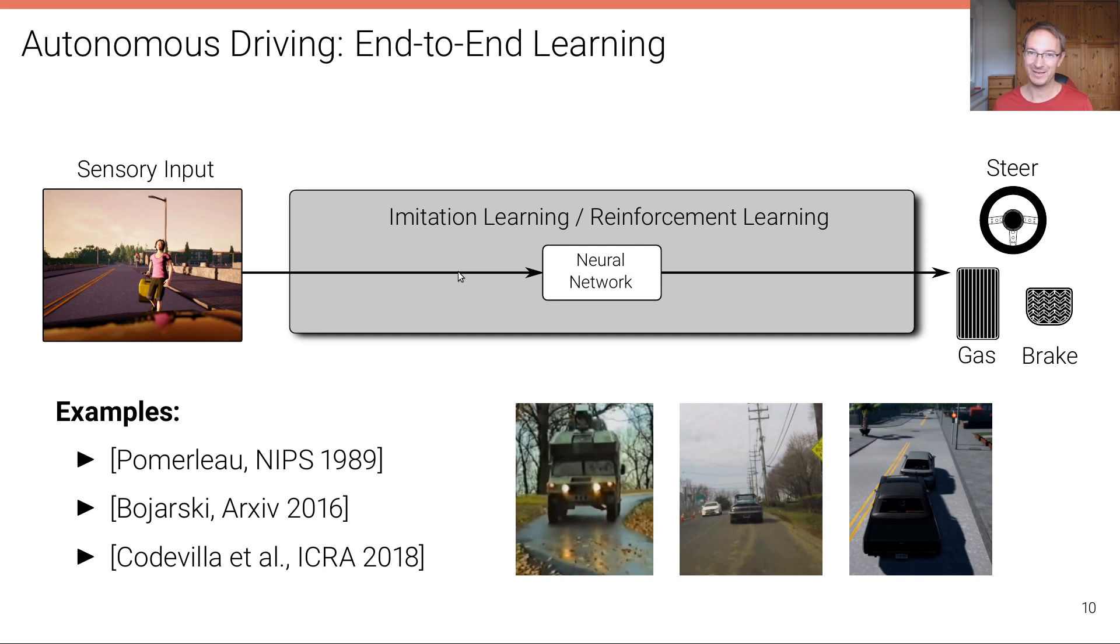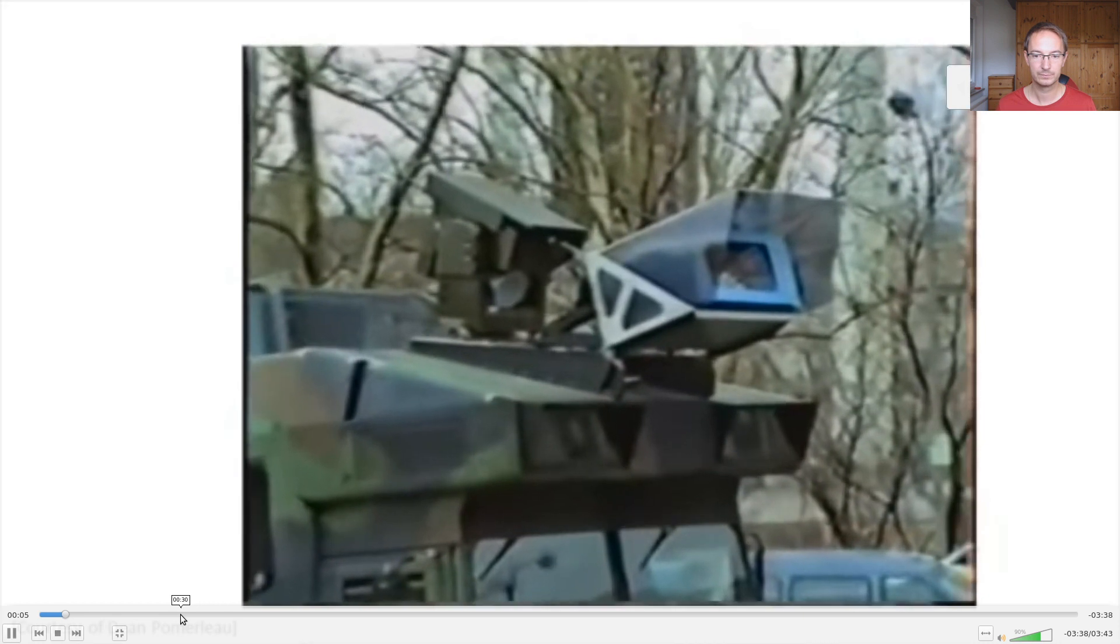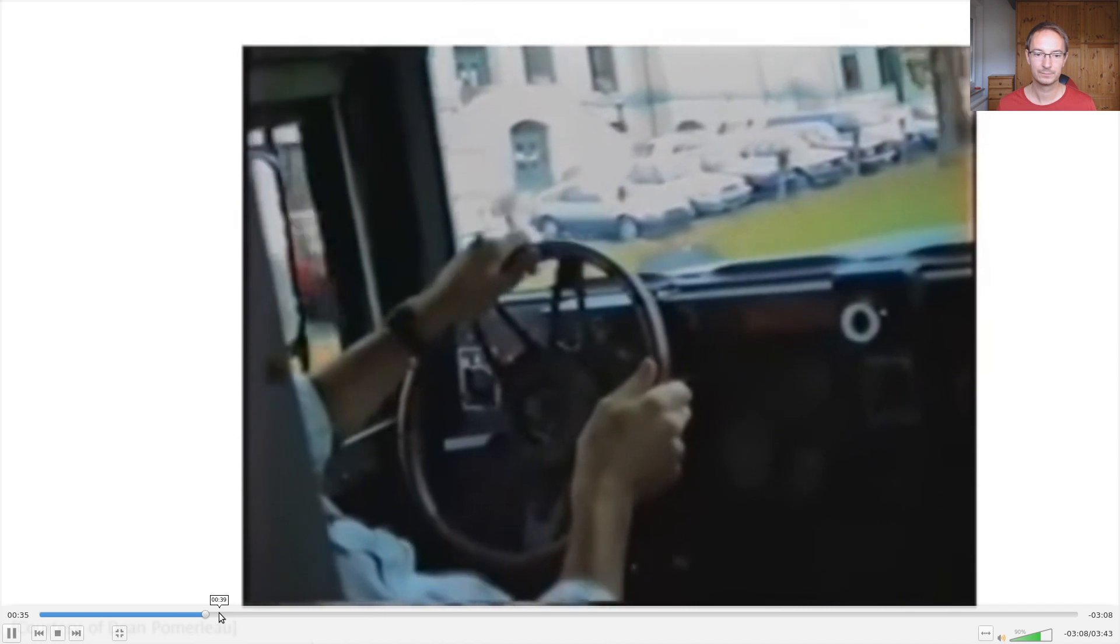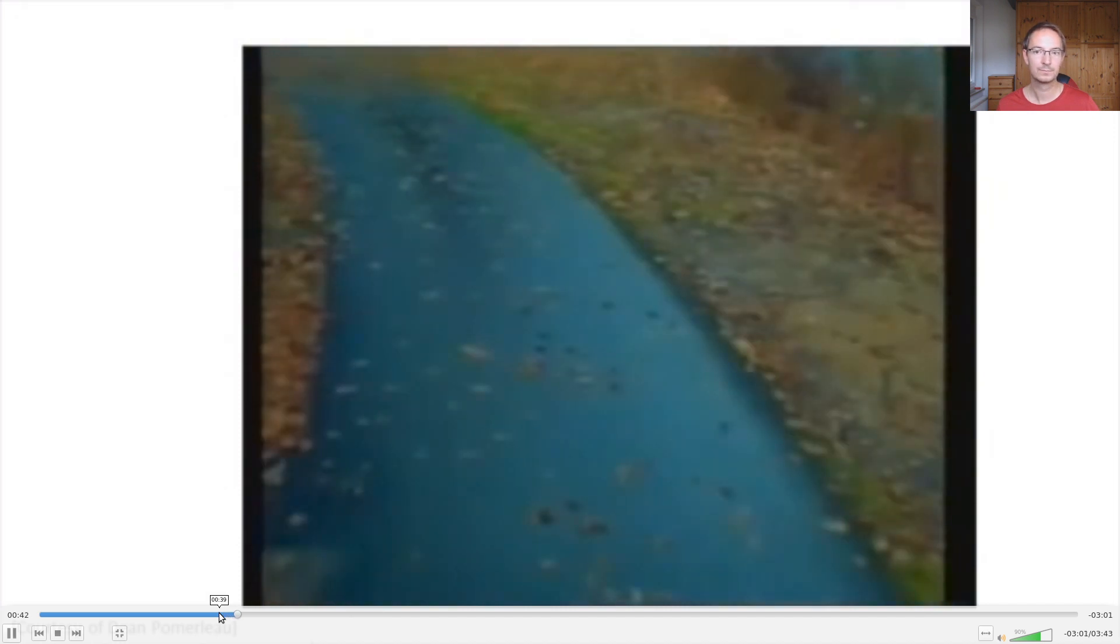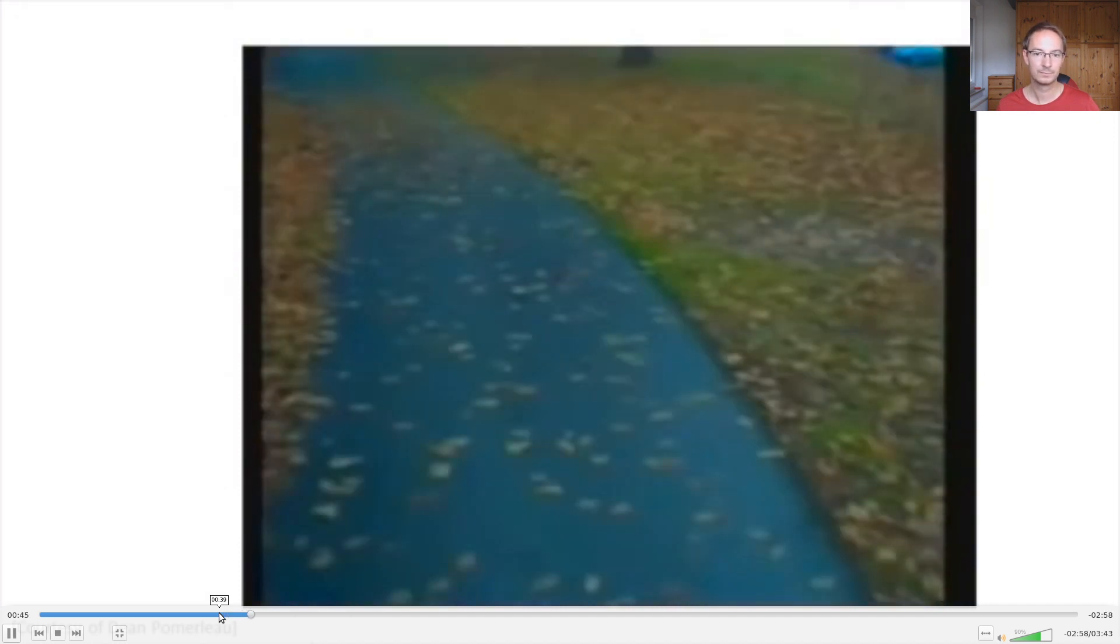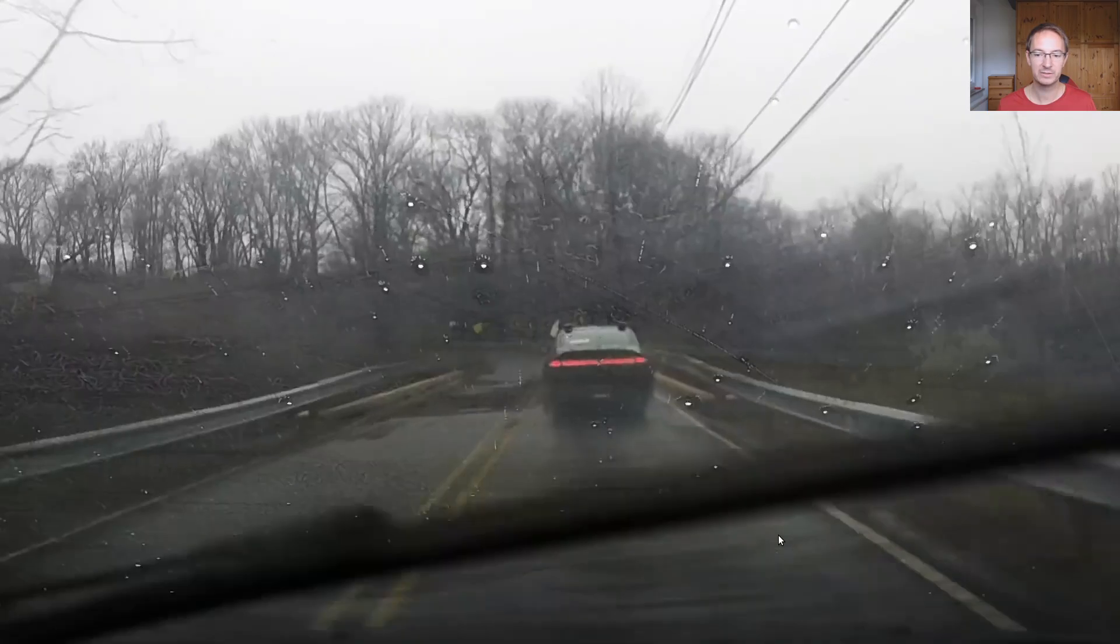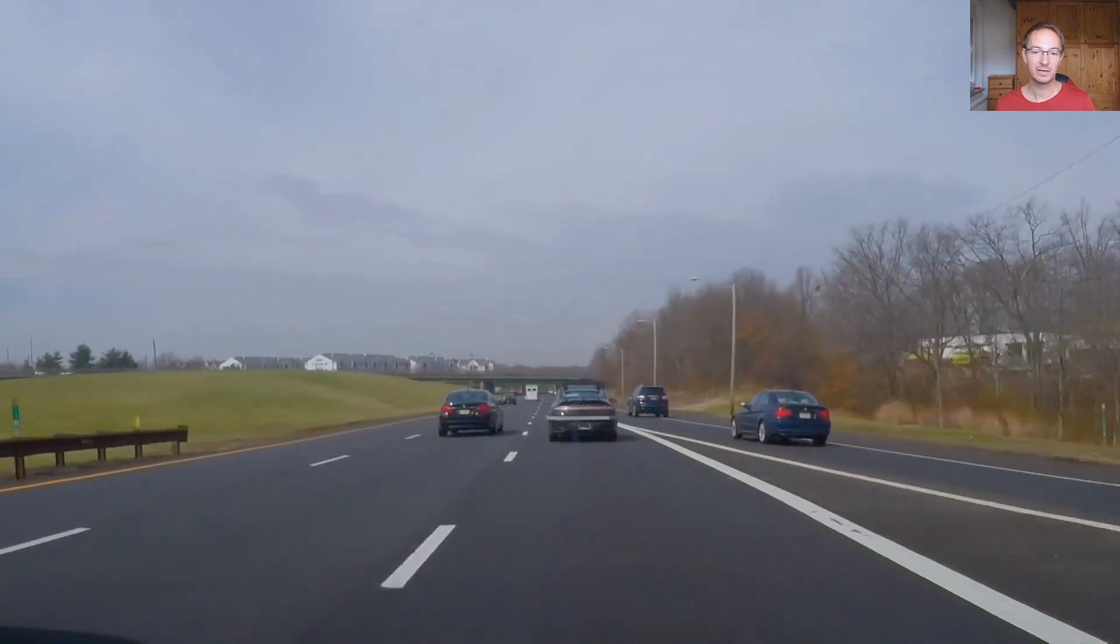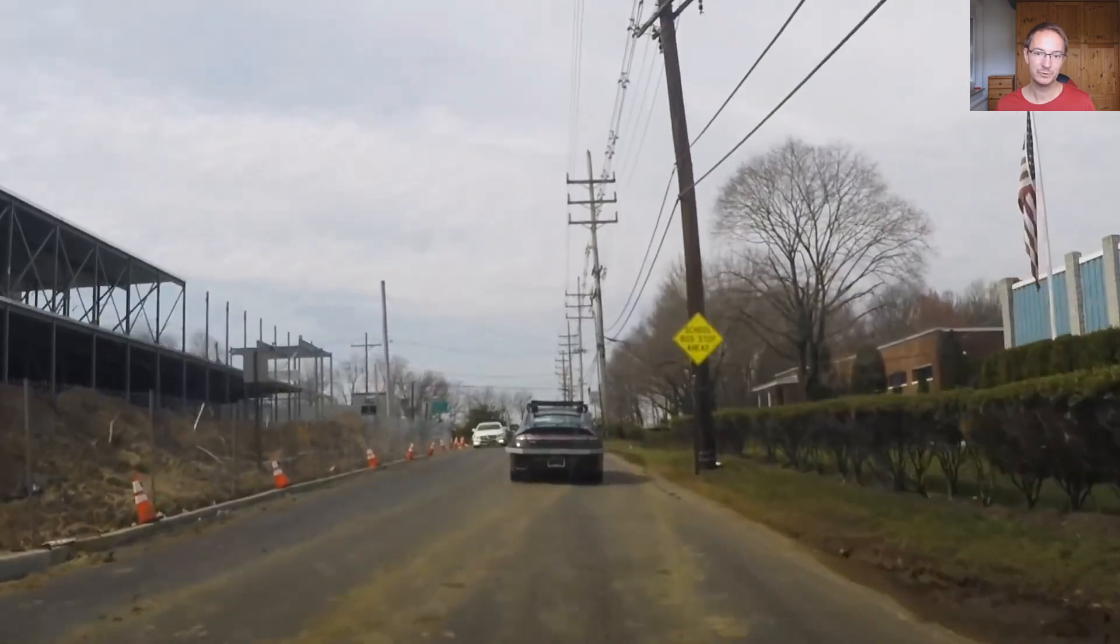Examples for this approach also range back to the early days of self-driving. We've already seen this, for example, here in this video of artificial neural networks that learns to steer by watching a person drive. Once every two seconds, Alvin digitizes a video image of the road ahead and records the person's steering direction. This is the Alvin vehicle from the 80s and there's several modern reincarnations. For example, here in this video, NVIDIA is driving a car based on the same algorithms, just using more modern computers and more modern neural network architectures.